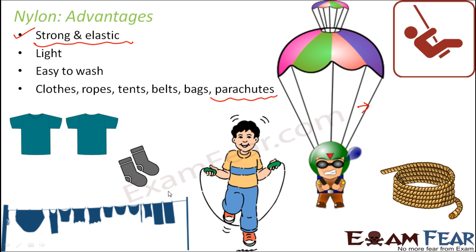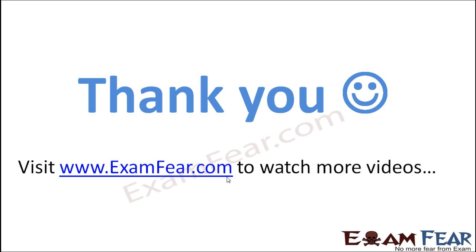Nylon is also used in skipping ropes and as rods for drying clothes. There are several advantages associated with nylon, and its most notable properties are that it is very strong, elastic, and at the same time light in weight.